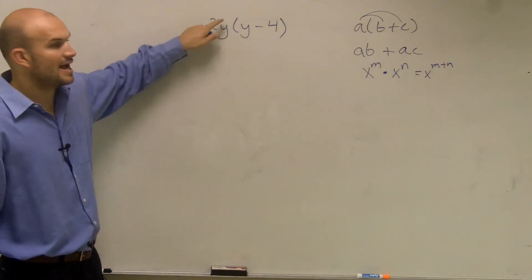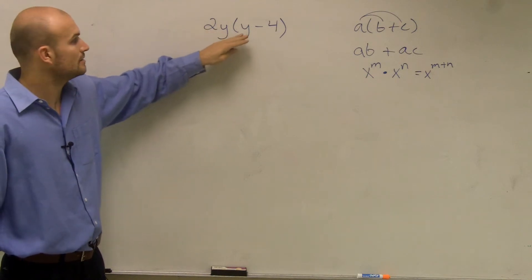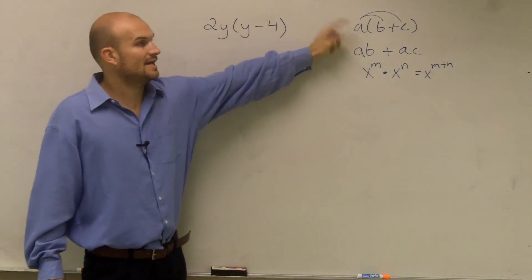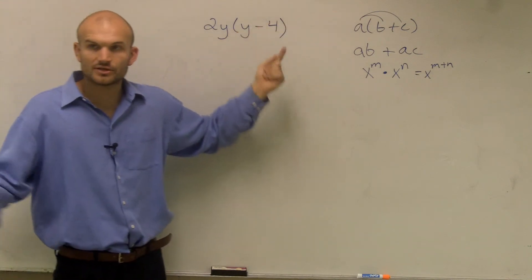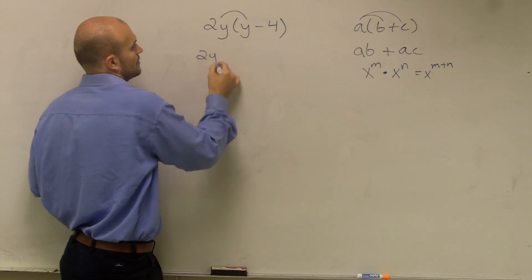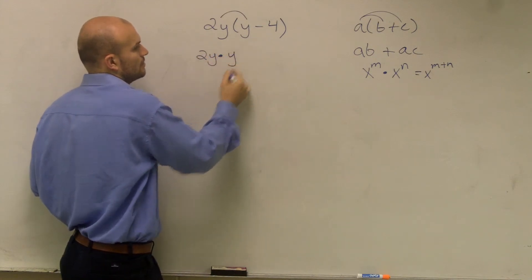So the first thing I notice is I have to multiply my 2y times both of my terms inside of here. I know instead of A, I have a 2y, right? But you can just treat it like that. So it's going to be 2y times y.